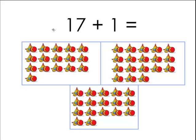Ok, so now we see the problem 17 plus 1 and groups of toys. First, what is 17 plus 1? Well, if you add 1 more to 17, you must get 18. We need to find 18 groups of toys.